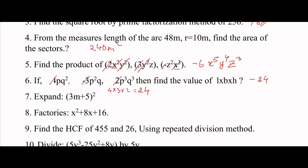Next, p terms: p¹ × p² × p³ = p⁶. Then q terms: q² × q³ × q³ = q⁸. So the final answer is -24p⁶q⁸.